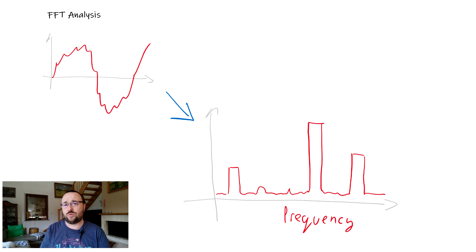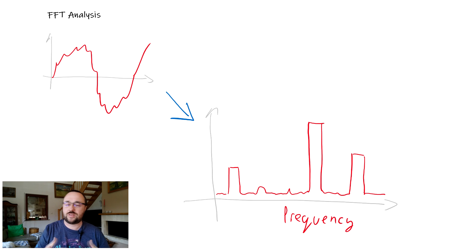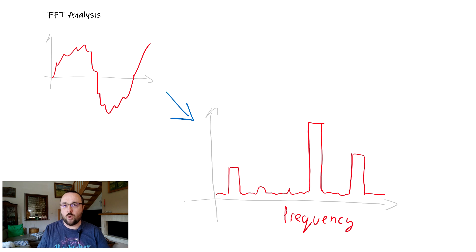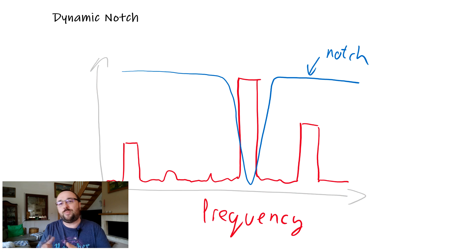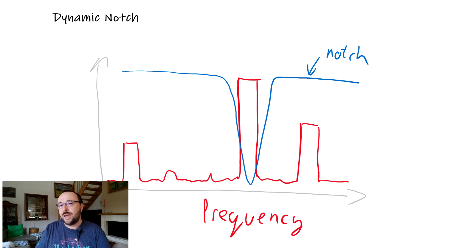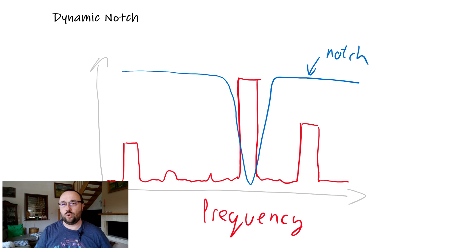Long story short: when we have a normal gyro trace, it's something called the time domain, where on the x-axis we have time. However, with fast Fourier transformation we go from the time domain to the frequency domain. The signal from the gyro on the x-axis, y-axis, and z-axis is passed through the FFT, and thanks to the FFT algorithm the algorithm is able to pick the peak frequencies. Usually the peak frequency above a certain minimum frequency is the frequency of the current main noise source visible in the gyro trace.